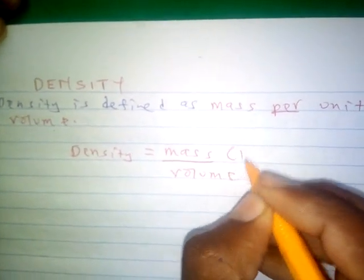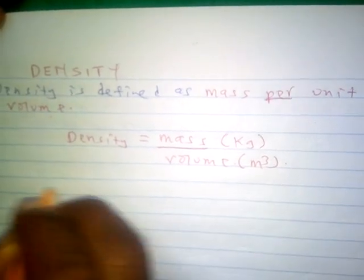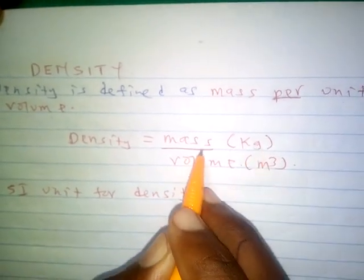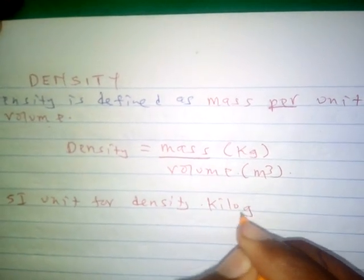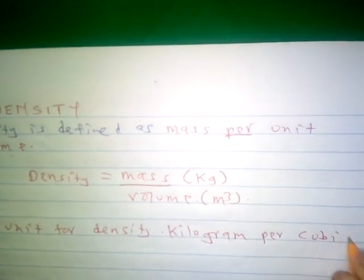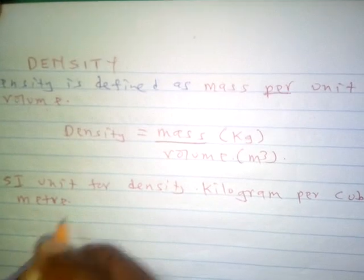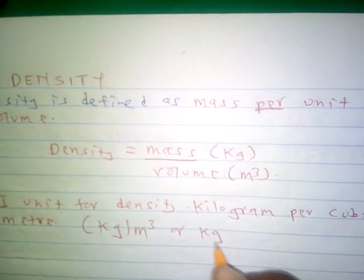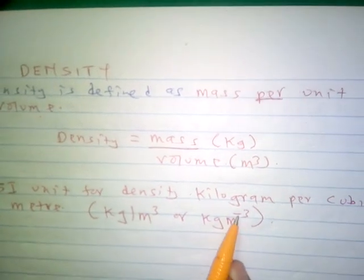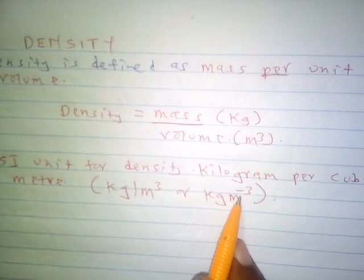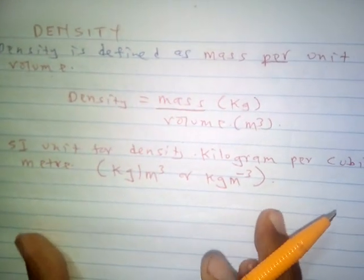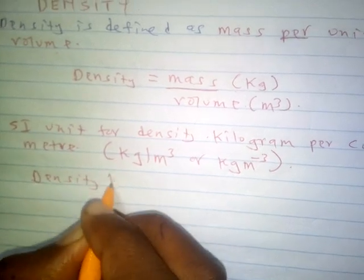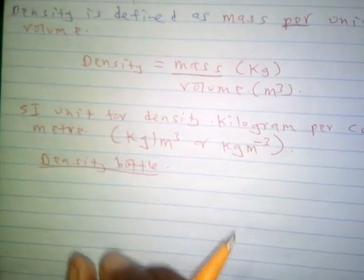The SI unit for mass is the kilogram and the SI unit for volume is the cubic meter. So the SI unit for density is kilogram per cubic meter, which can also be written with a negative exponent. You will understand this better when you learn about indices. Density is measured directly using an instrument called a density bottle.